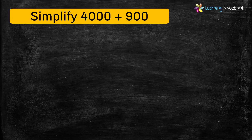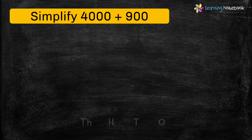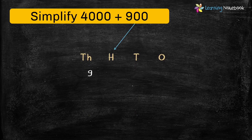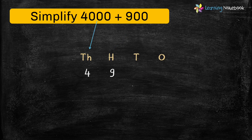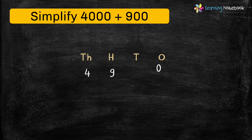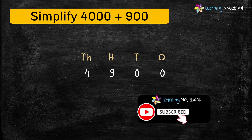Now, the last question: Simplify 4000 plus 900. Again, let's start solving from the right. The first number on the right is 900, which forms the digit at 100's place. There is nothing mentioned about the digits at 1's and 10's place in the expanded form, so the digits at both these places will be 0. So, students, the 4-digit number we get is 4900.